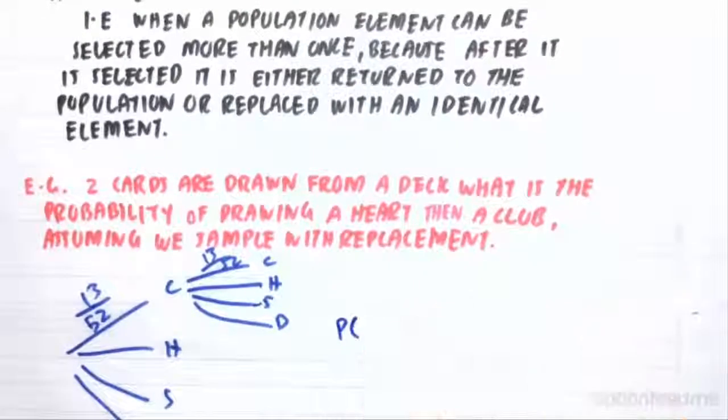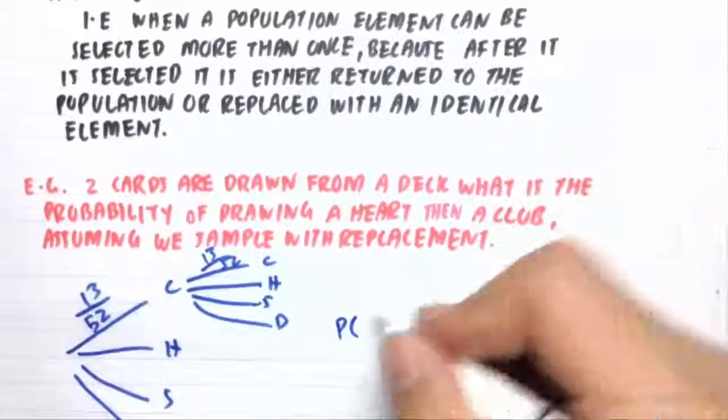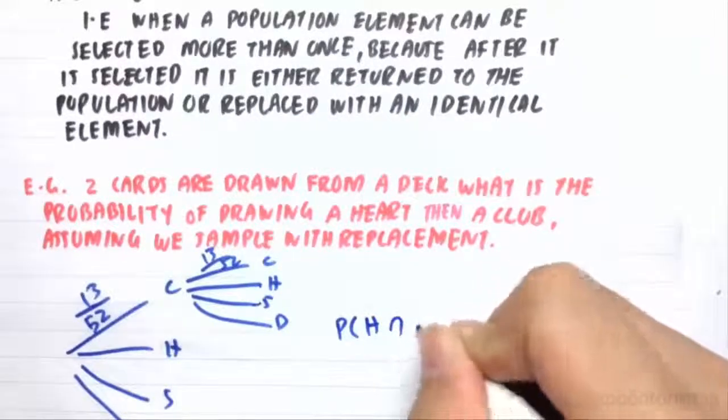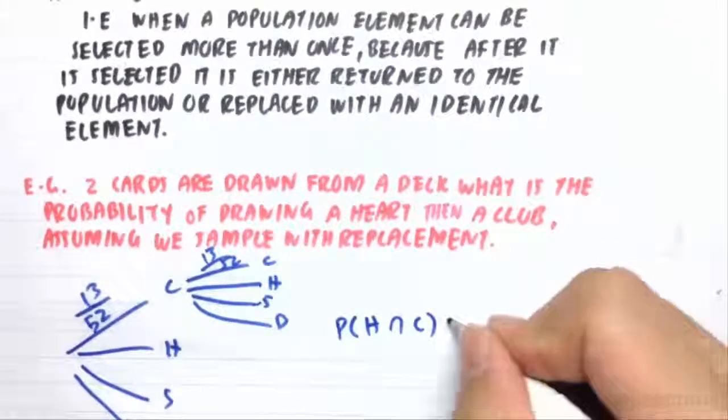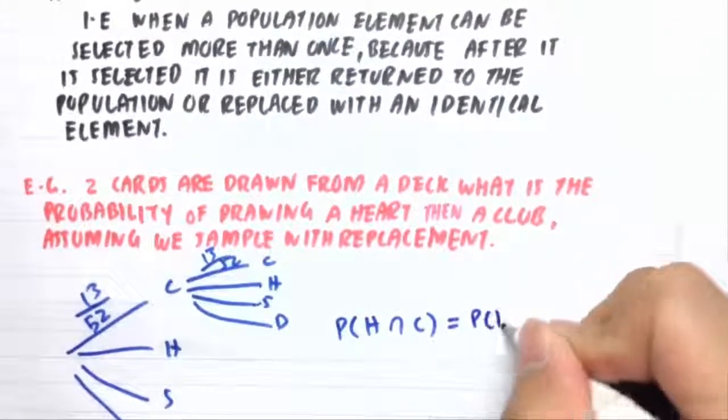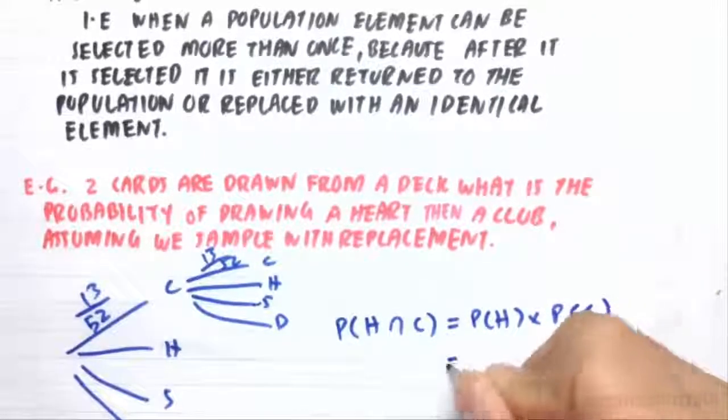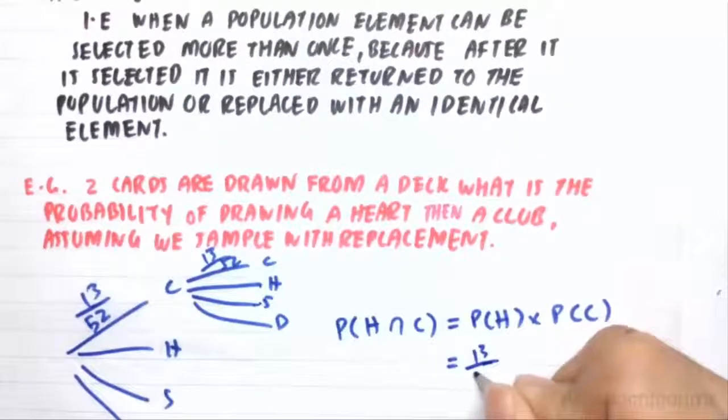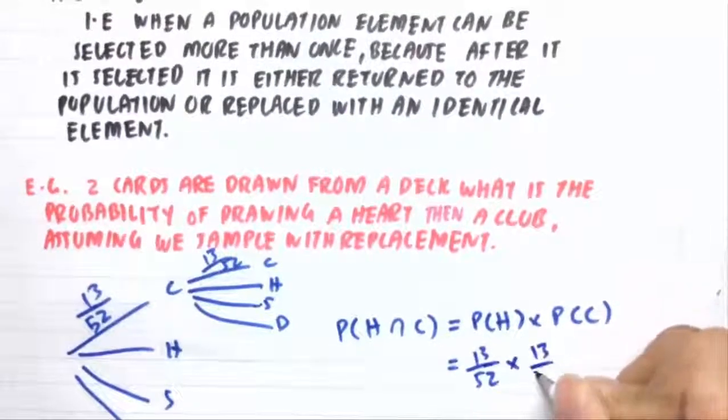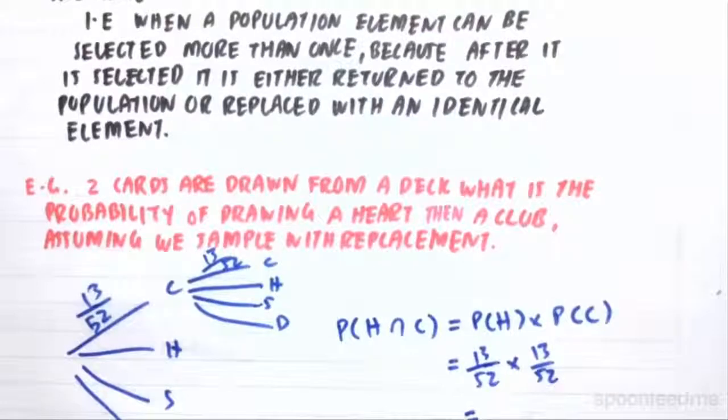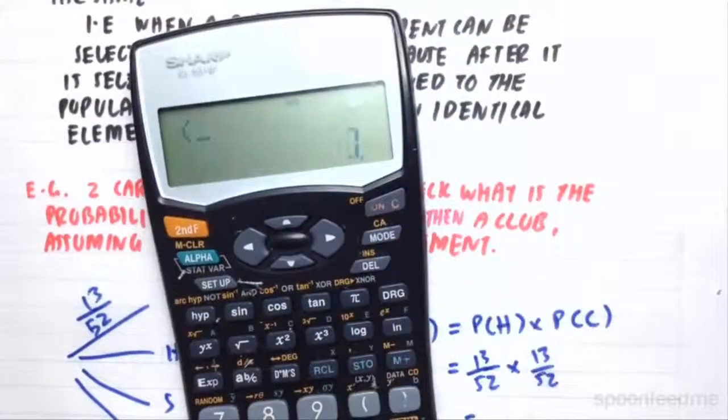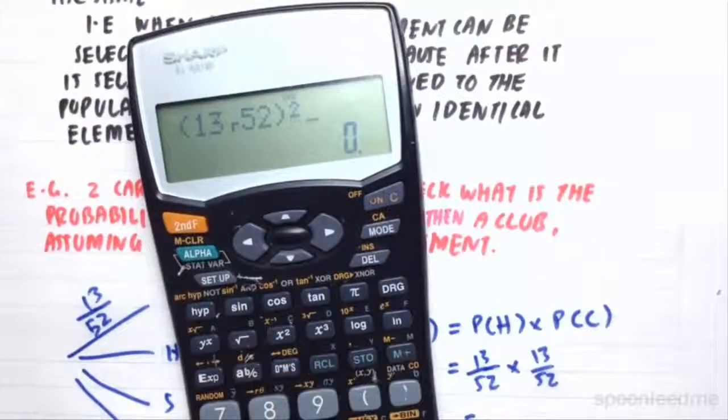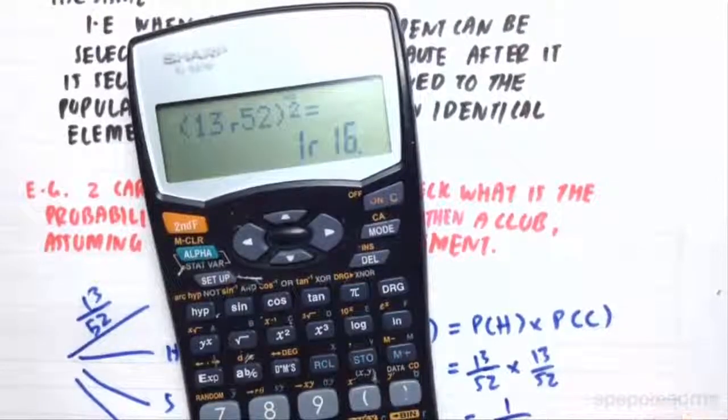Therefore, the probability of getting a heart and a club, assuming that we're replacing them, would just equal the probability of a heart times the probability of getting a club, which would equal to 1 in 4 or 13 in 52 times 13 in 52, which equals 13 over 52 squared. That gives us 1 in 16 as the probability.